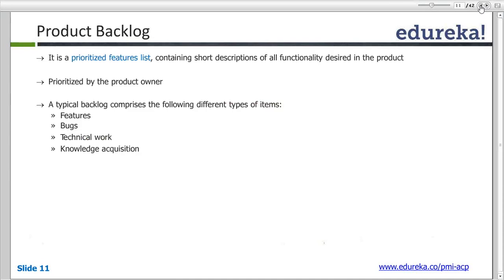Coming back to the product backlog definition — we discussed that the product owner owns it and prioritizes it, but all the detailing and acceptance criteria are written by the team in discussion with the product owner. Once the product owner prioritizes, the team picks up those prioritized features and decides how they will work on them. Product owner defines the priority, but it doesn't command the team — it's the team who picks up the features. This goes back to the Agile manifesto principle of empowered teams.